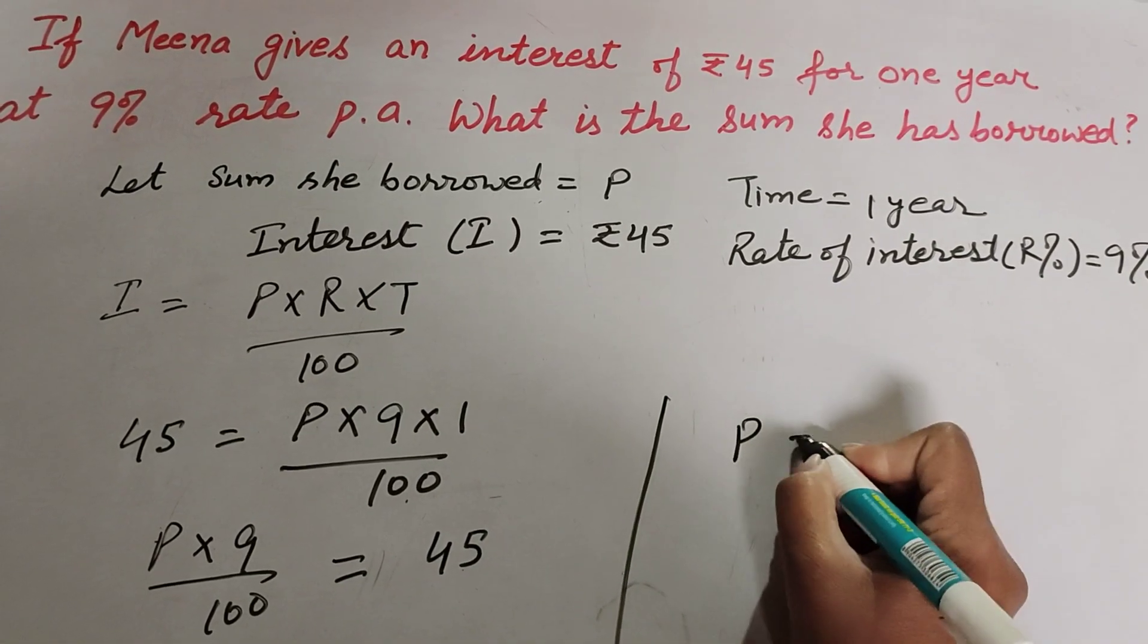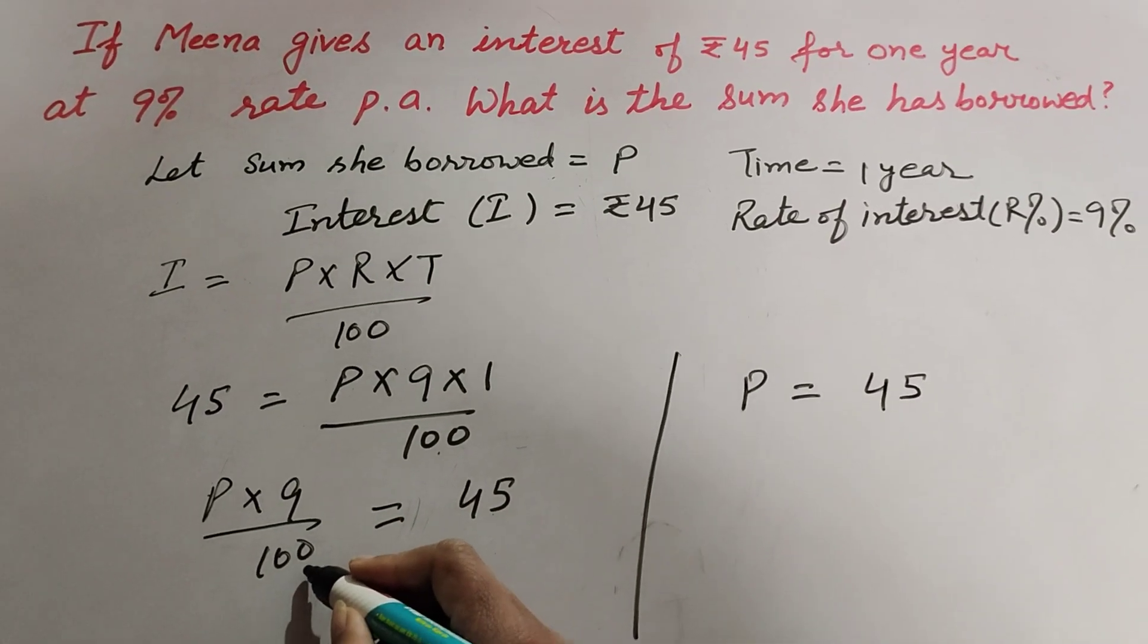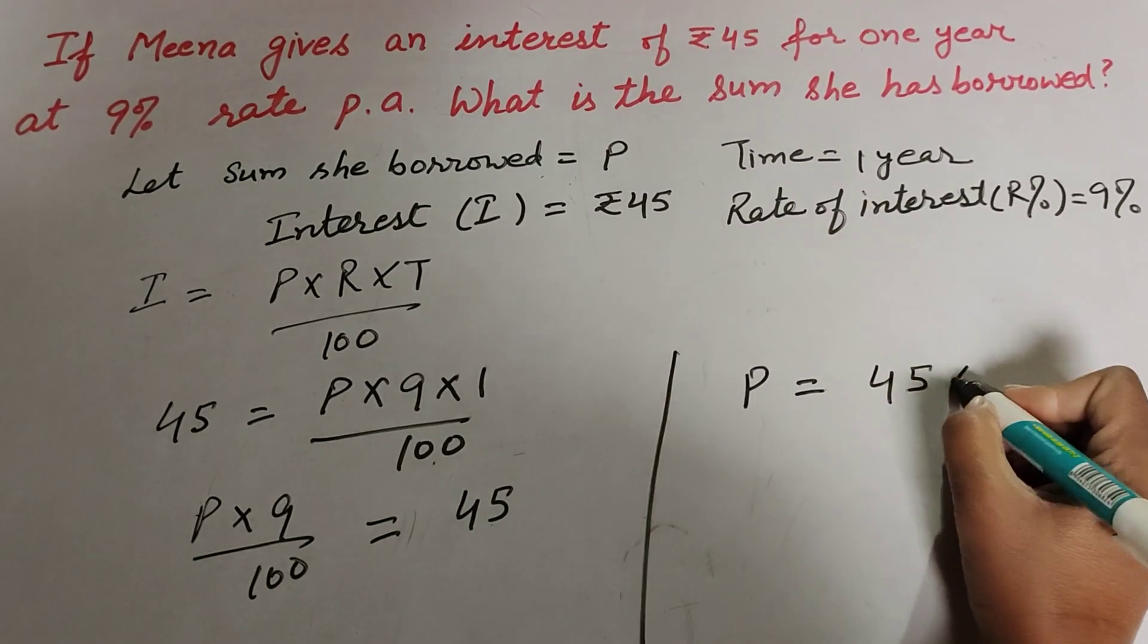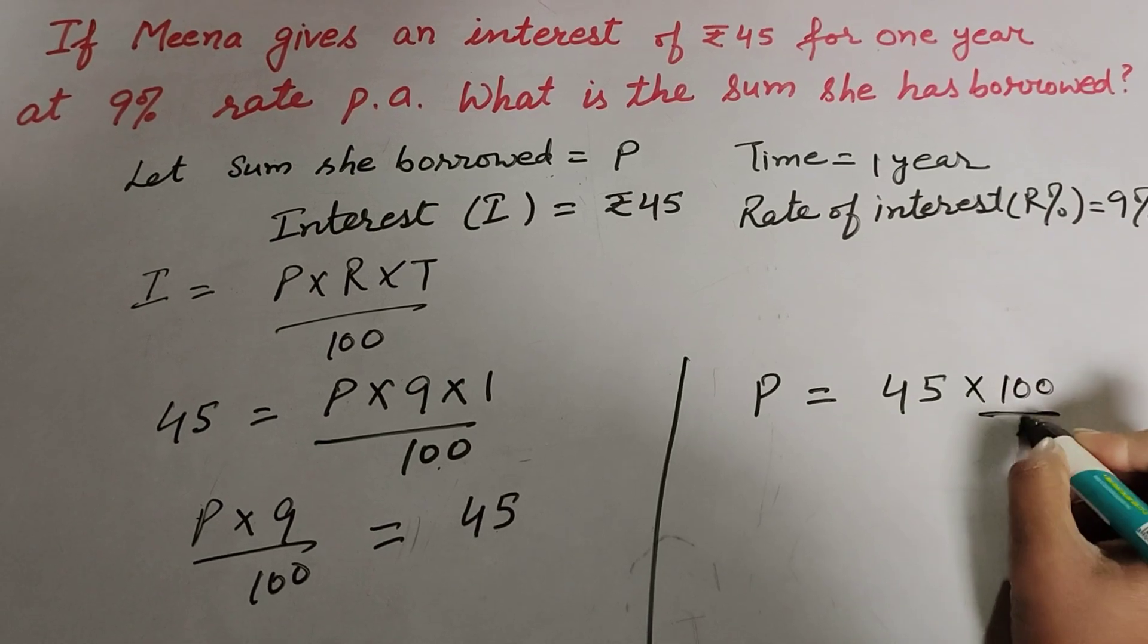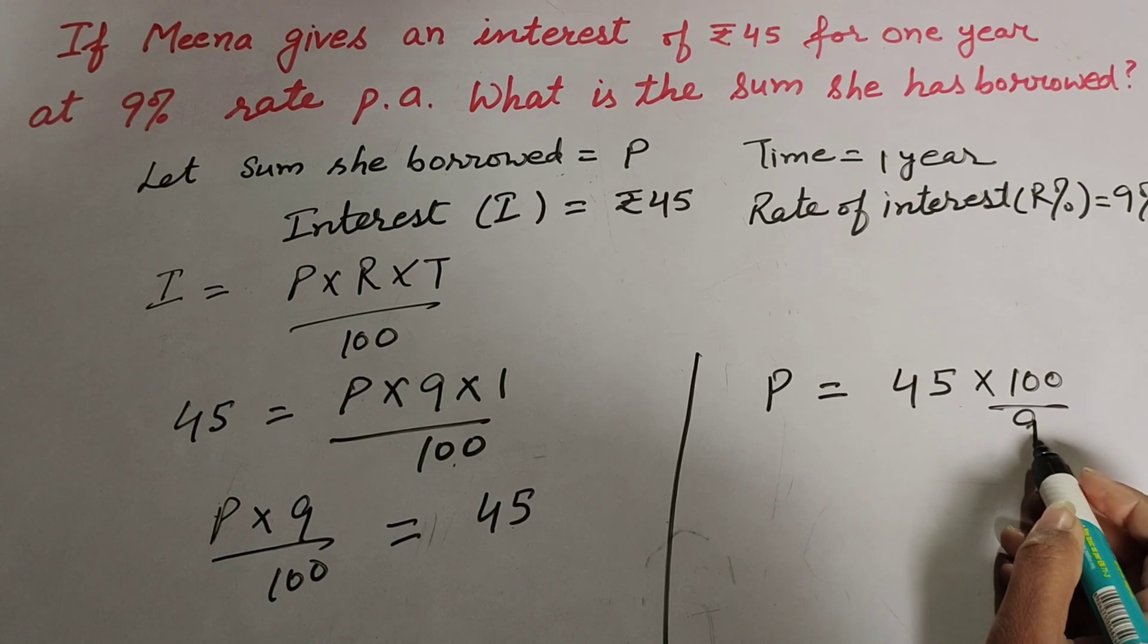So P = 45 × 100 / 9. Transposing to the right-hand side, we multiply by the reciprocal: 100/9. Now 45 and 9 are both divisible by 9, so we can cancel them. 9 × 1 = 9, 9 × 5 = 45.